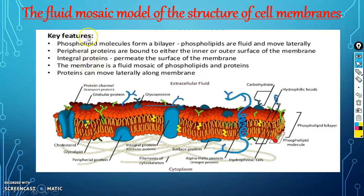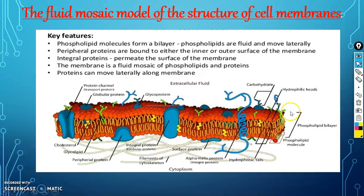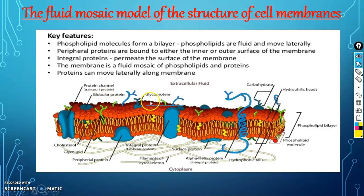Key features of the fluid mosaic model: phospholipid molecules form the bilayer; phospholipids are fluid and move laterally. Peripheral proteins found on the periphery are bound to either the inner or outer surface. Integral proteins permeate through the membrane. The membrane is a fluid mosaic of phospholipids and proteins, and proteins can move laterally along the membrane. Components visible in this model include hydrophobic tails, alpha-helix proteins, surface/peripheral proteins, cholesterol, glycolipids, filaments of the cytoskeleton, protein channels, globular proteins, and glycoproteins.